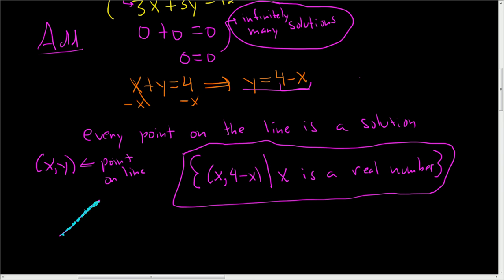So we have infinitely many solutions, and those solutions are the points on the line. Points on a line are written as (x, y). We solved for y, so we wrote it as (x, four minus x). I hope this helps someone out there.